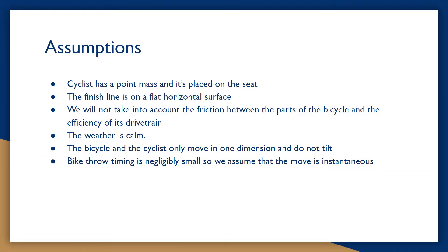To simplify our model and computations, we use these assumptions. The first one is that the cyclist has a point mass, and it's placed on the seat. Then we assume that the finish line is on a flat horizontal surface to avoid calculating additional forces. Also, we will not take into account the friction between the parts of the bicycle and the efficiency of its drivetrain, for the same reason as the previous one. The weather is calm, it means there is no wind whatsoever, and the air density is average. To decrease complexity of the model, we think that the bicycle and the cyclist only move in one dimension and do not tilt. And the last one: bike throw timing is negligibly small, so we assume that the move is instantaneous. This was made to use the law of conservation of momentum.